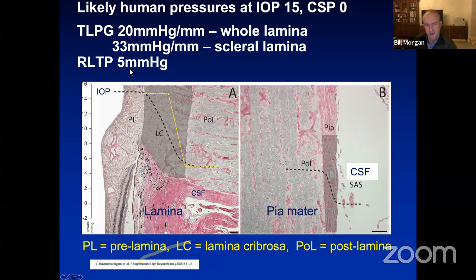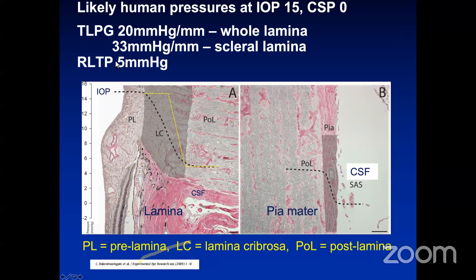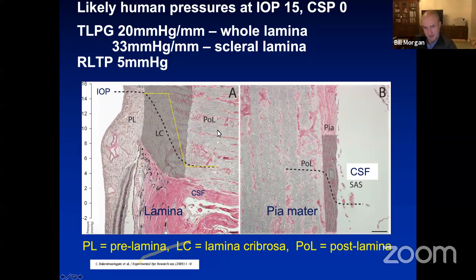The likely retro-lamina pressure in this part of the nerve is about five millimetres of mercury.